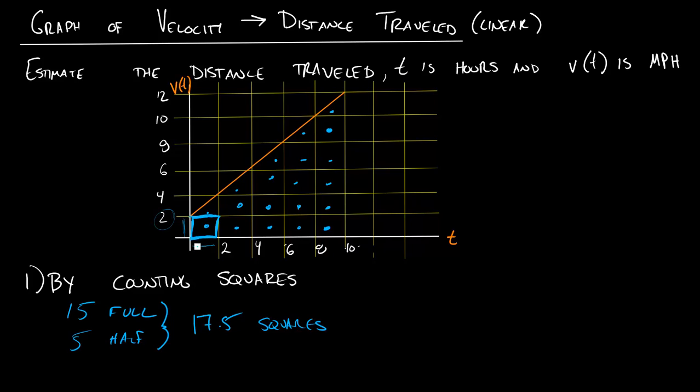For 2 hours, that's what the length of this square is, how far would I have traveled? The answer is just 2 times 2. I'm traveling 2 miles an hour for 2 hours—2 times 2, so that's 4 miles. What I want to do is multiply my 17.5 squares by 4 miles per square.